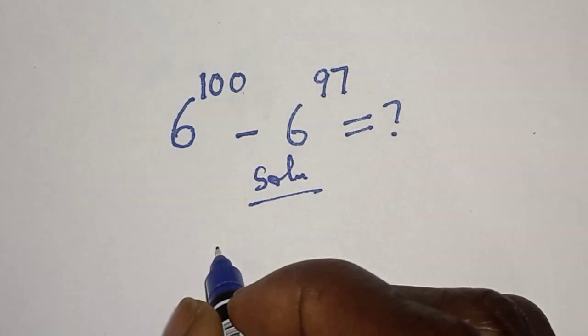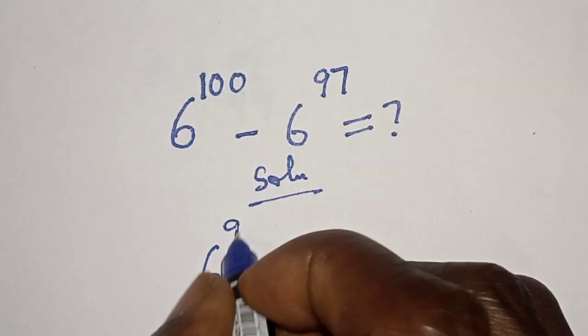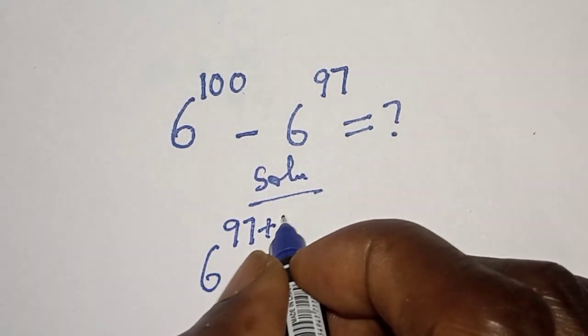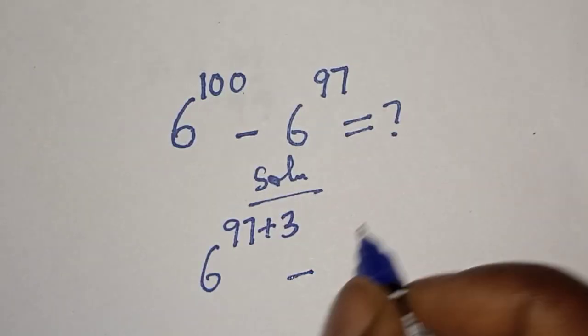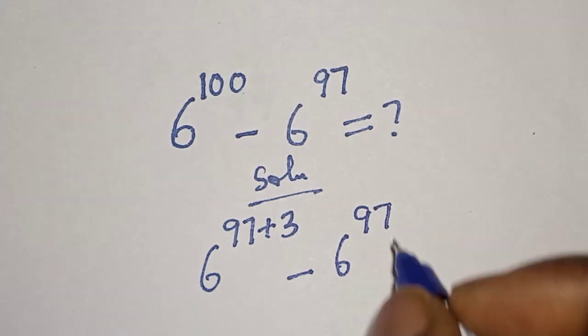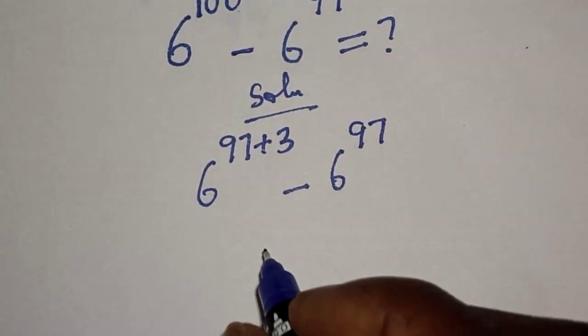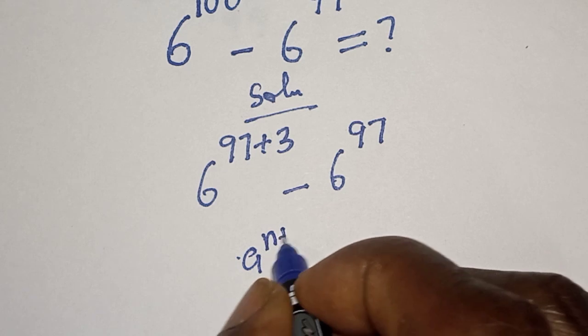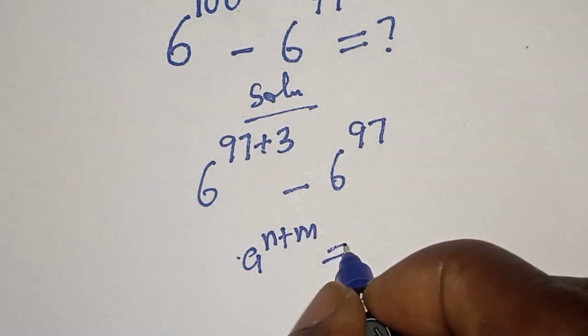Solution: 6 to the power 100 can be written as 6 to the power of 97 plus 3, minus 6 to the power of 97. Take note of this rule: if you have a to the power n plus m, this is